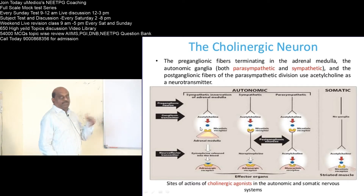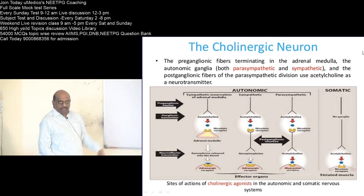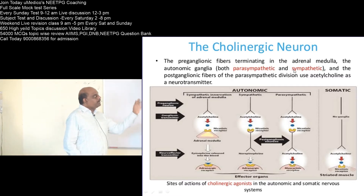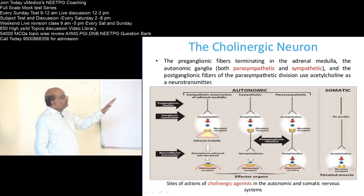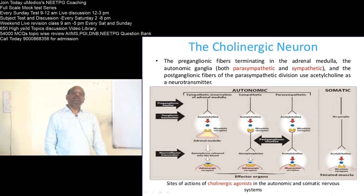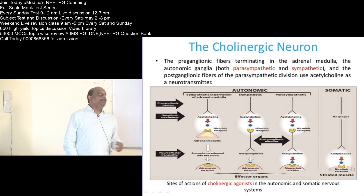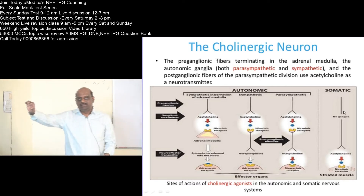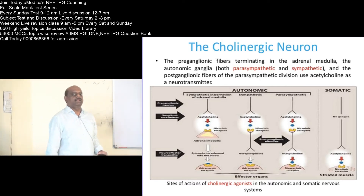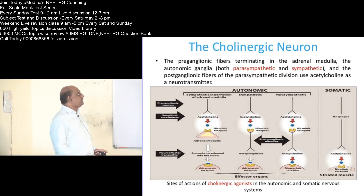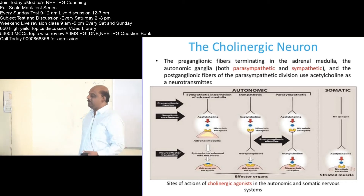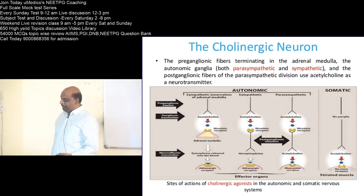To summarize: the preganglionic fibers terminating in the adrenal medulla, both sympathetic and parasympathetic autonomic ganglia, and the postganglionic fibers of the parasympathetic division — such as the vagus, which is a parasympathetic cranial nerve — will typically have acetylcholine as a neurotransmitter.